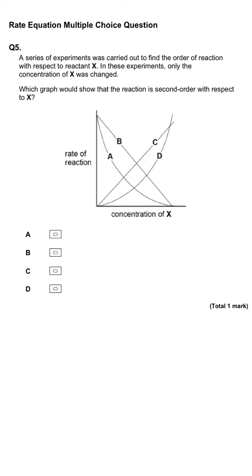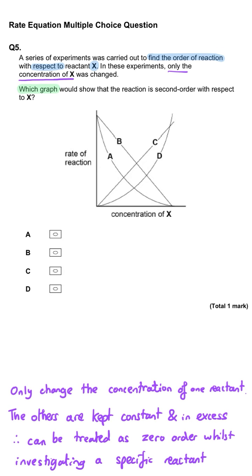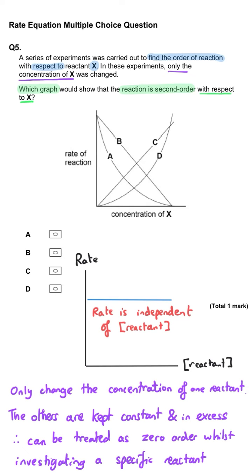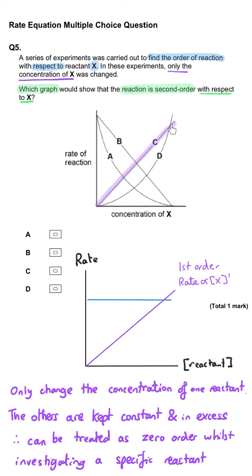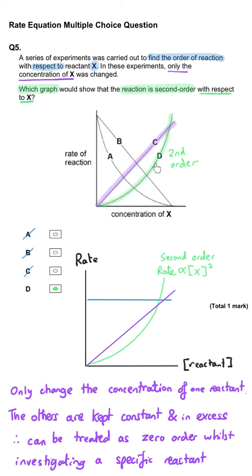A series of experiments was carried out to find the order of reaction with respect to reactant x, where only the concentration of x was changed. Which graph shows that the reaction is second order with respect to x? There are only three possible graph shapes. A zero order reaction gives a horizontal line — rate is independent of concentration. Line C is the first order reaction: a straight line through the origin showing direct proportionality. Line D is the second order reaction: as concentration increases, rate increases exponentially. So D is correct.